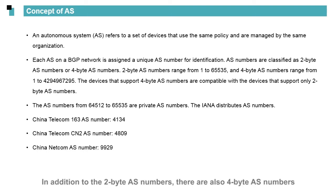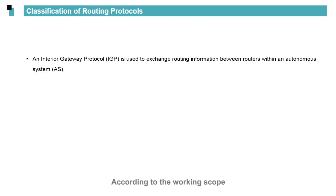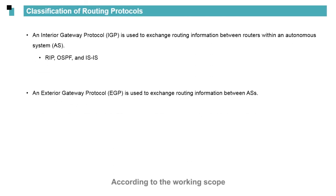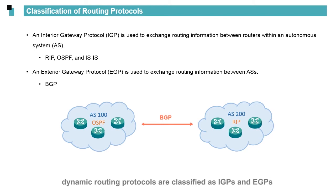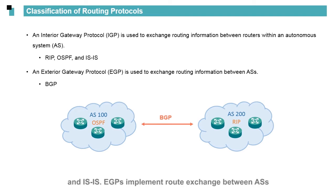The AS numbers from 64512 to 65535 are private AS numbers and cannot be used to access the public network. In addition to the 2-byte AS numbers, there are also 4-byte AS numbers. According to the working scope, dynamic routing protocols are classified as IGPs and EGPs. IGPs work inside an AS.